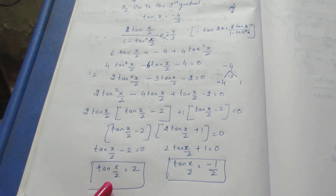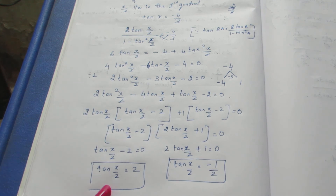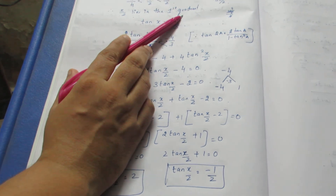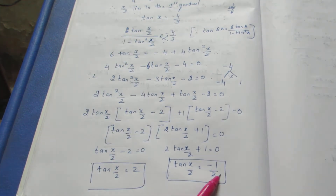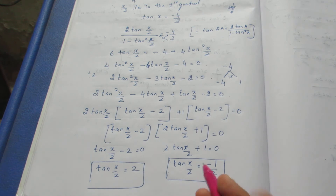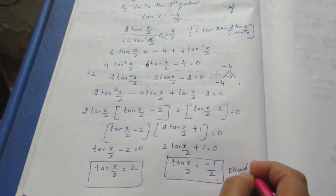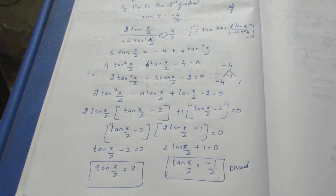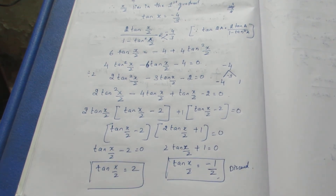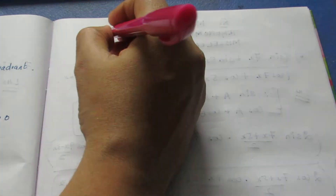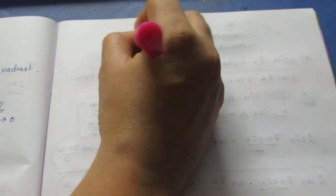Now we know that x/2 lies in the first quadrant, where all trigonometric ratios are positive. So the negative value, tan(x/2) equals minus 1 by 2, is discarded. Therefore, tan(x/2) equals 2, which we can write as 2 by 1.